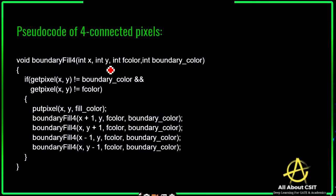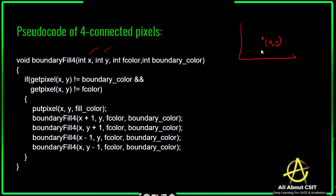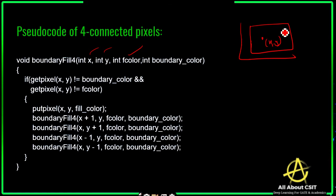The pseudocode signature is: void fill(int x, int y, int fill_color, int boundary_color). Here x, y are the coordinates of the pixel in the 2D plane, inside the polygon. fill_color is the color present inside the polygon, and boundary_color is the color of the boundary. First, check get_pixel(x, y).